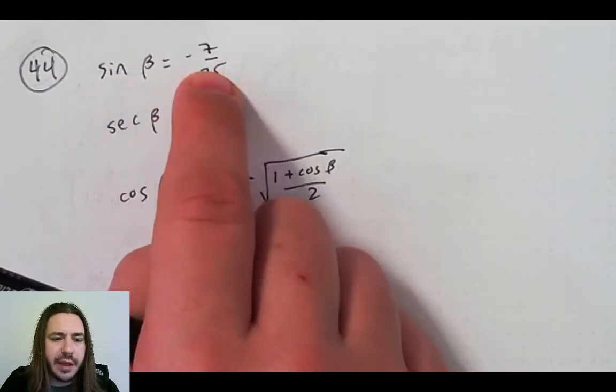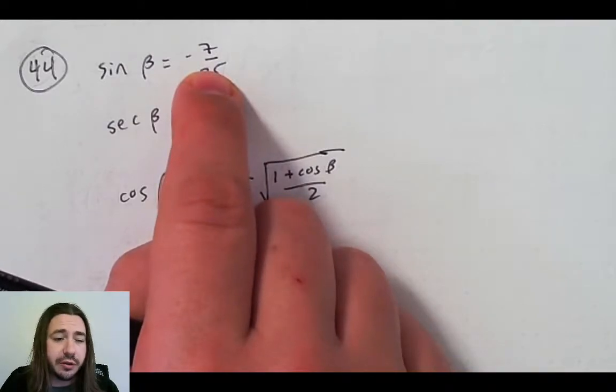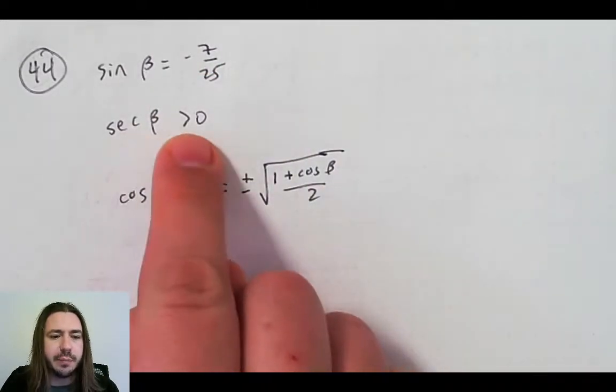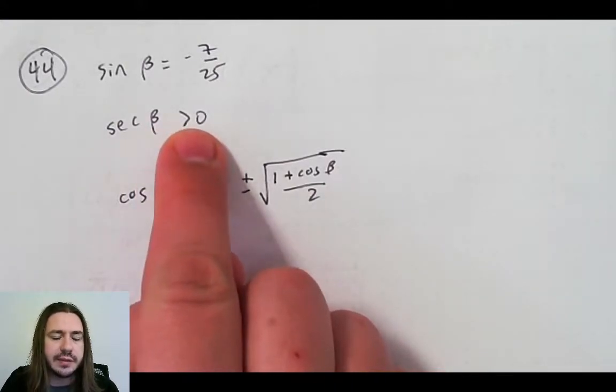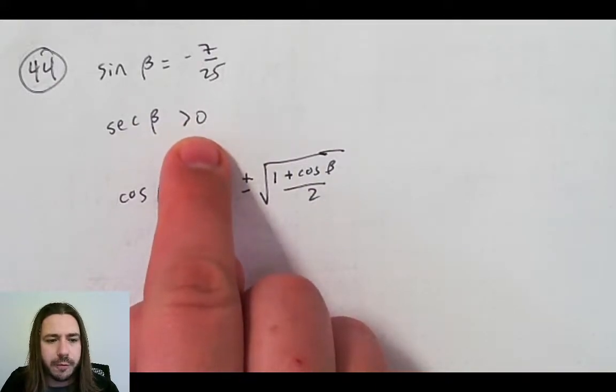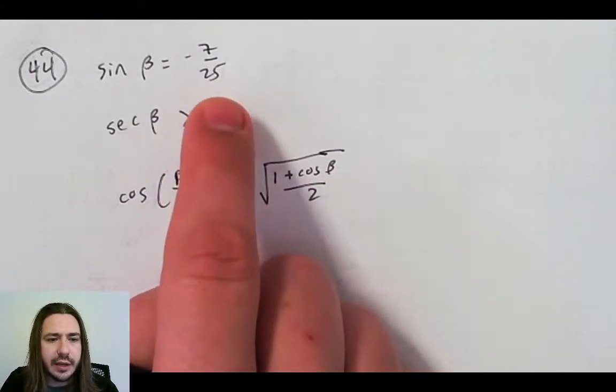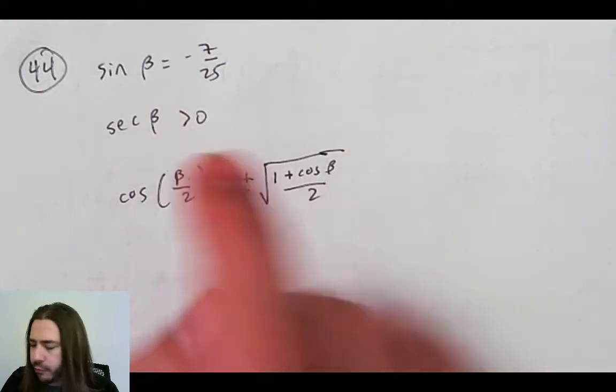So the sine of beta is negative, so that means we're either in quadrants 3 or 4. The secant of beta is positive, secant being the reciprocal of cosine, means that we're either going to be in quadrants 1 or 4. So it looks like we've got to be in quadrant 4 then.